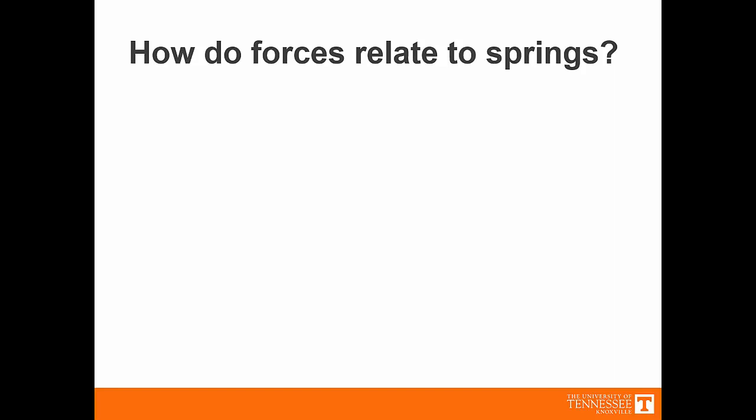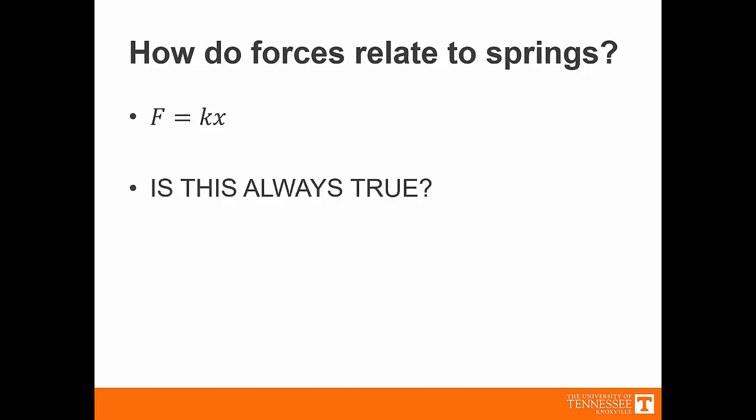The next question is, how does a spring actually produce the force? We start off with the equation F is equal to kx, of course. But is that always true? For instance, does k have to be a constant? Or maybe we have a torsional spring, where the units for k could be newton meters per radian. Even a rotational or torsional spring could be variable across different values of theta.